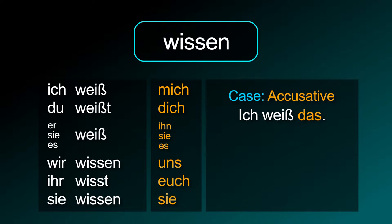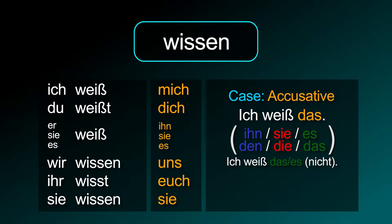In German there are two words with the meaning 'to know.' The verb wissen has to be used when you have knowledge about something. If you want to say that you know somebody or a particular thing, like a movie or a book, then you have to use the verb kennen.